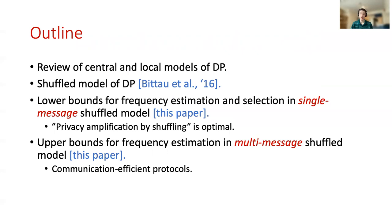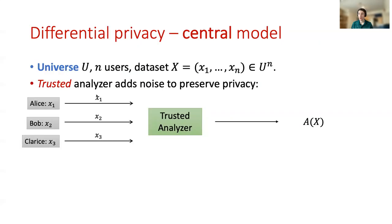The first result is a lower bound for the problem of frequency estimation in the single message shuffle model. What we show is, roughly speaking, that the phenomenon of privacy amplification by shuffling leads to optimal protocols for the frequency estimation problem. Then I'll talk about how we can surpass these lower bounds using the multi-message shuffle model, and how we can make those protocols communication efficient. We assume there's a universe U, which is simply a finite set.